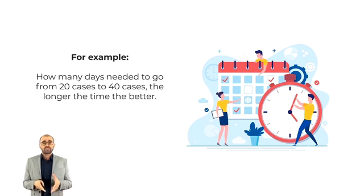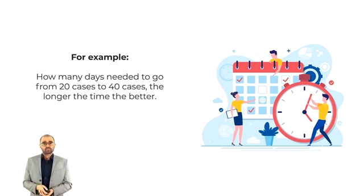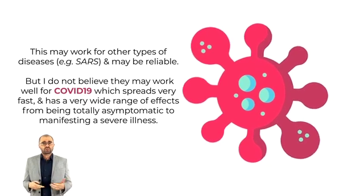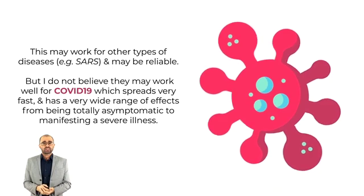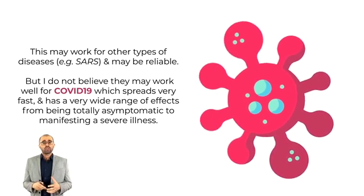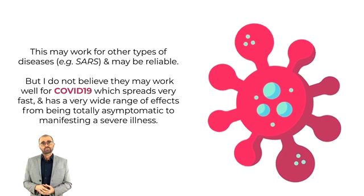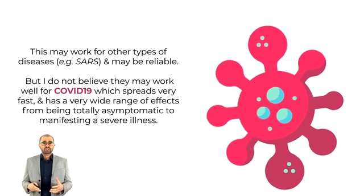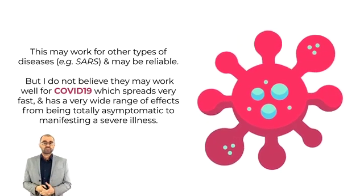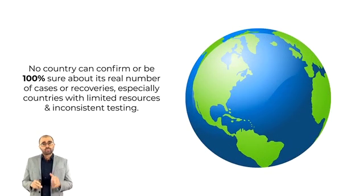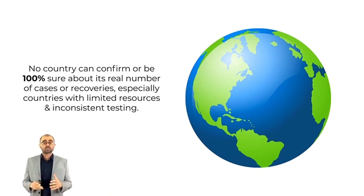For example, how many days are needed to go from 20 cases to 40 cases — the longer the time, the better. This may work for other types of diseases, like SARS, which do not have a lot of asymptomatic cases and may be reliable, but I do not believe it may work well for COVID-19. COVID-19 spreads very fast and has a very wide range of effects, from being totally asymptomatic to manifesting severe illness. No country can confirm or be 100% sure about its real number of cases or recoveries, especially countries with limited resources and inconsistent testing.